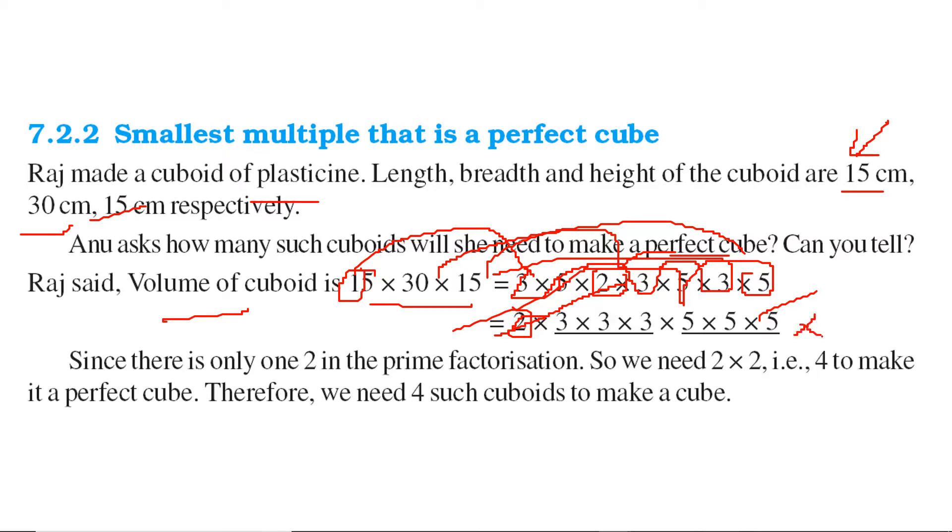So if we multiply it by 2 and 2, we get 2 cubed. This 2, 2s and this is 1, 2. So you get 2 cubed. So 2 into 2, that's 4, this is what is needed. Therefore 4 such cuboids are needed to make a cube.